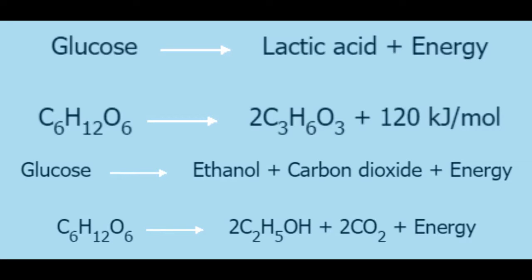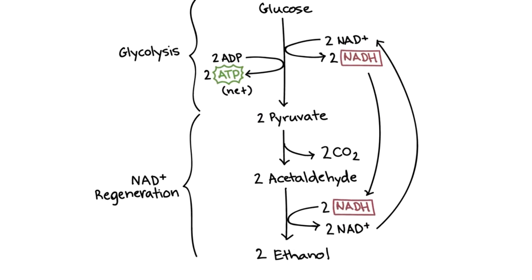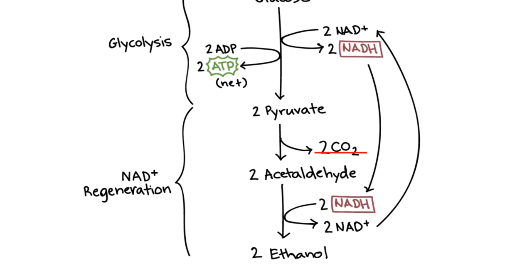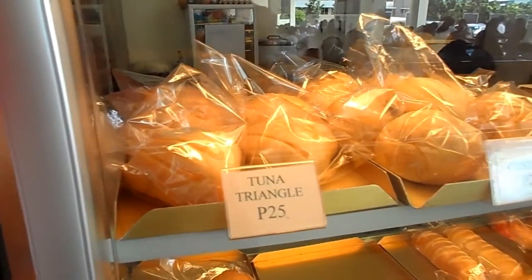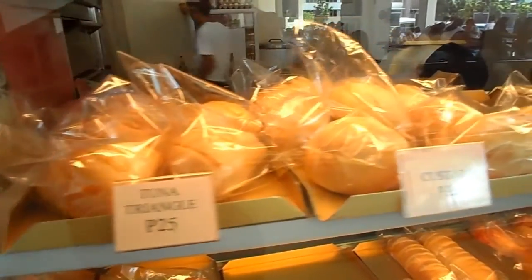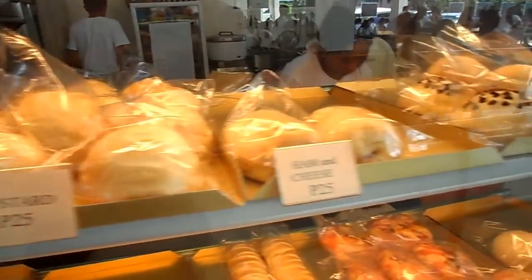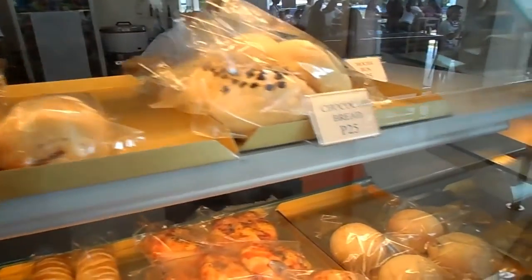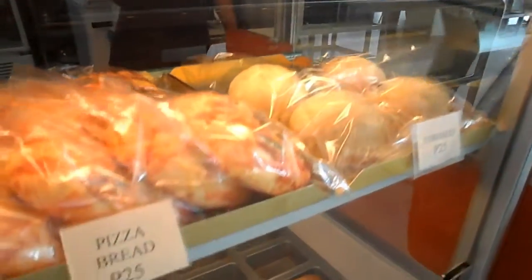Plants may also resort to using anaerobic respiration. In plants, glucose gets converted to ethanol, carbon dioxide, and energy. This reaction also occurs in yeast cells and is called fermentation. Fermentation is used in baking bread and brewing alcohol.